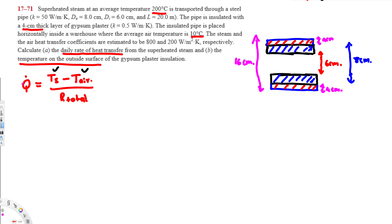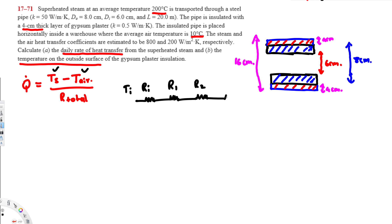The resistance network is drawn in series: starting from inside convection R_inside, then steel conduction R1, then insulation conduction R2, and finally outer convection R_outside, with the outer air temperature on the far end.